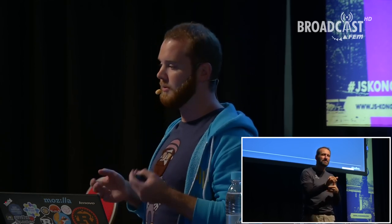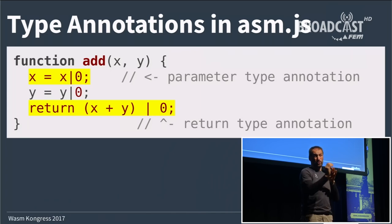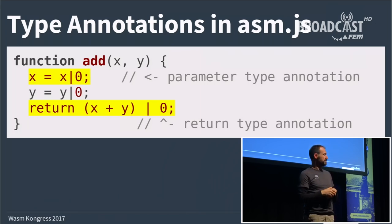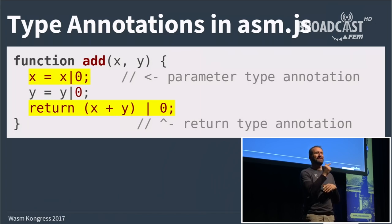To make this more efficient, we can tell the engine what to expect. We only want to execute on integers. Since there are no types in JavaScript, we use a type annotation — we binary-OR a variable with zero. This doesn't change the value, but because a binary OR with zero only makes sense for integers, the engine knows to expect an integer. Without changing the value, it can drop down to efficient machine code that just adds two integers and can be fast.